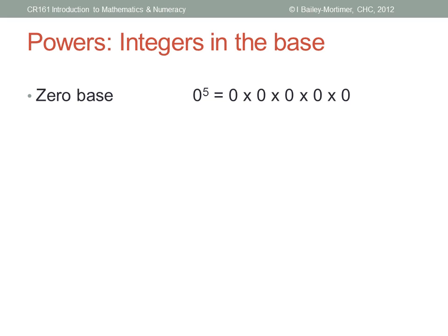Most people find power form with whole numbers easy enough. But what happens if we allow integers in the base or the index? First, what does it mean if the base is zero? Zero to the power of five means zero times zero times zero times zero times zero, five times. It doesn't matter how many zeros you multiply together — the answer is always zero. Zero to any non-zero power is just zero.